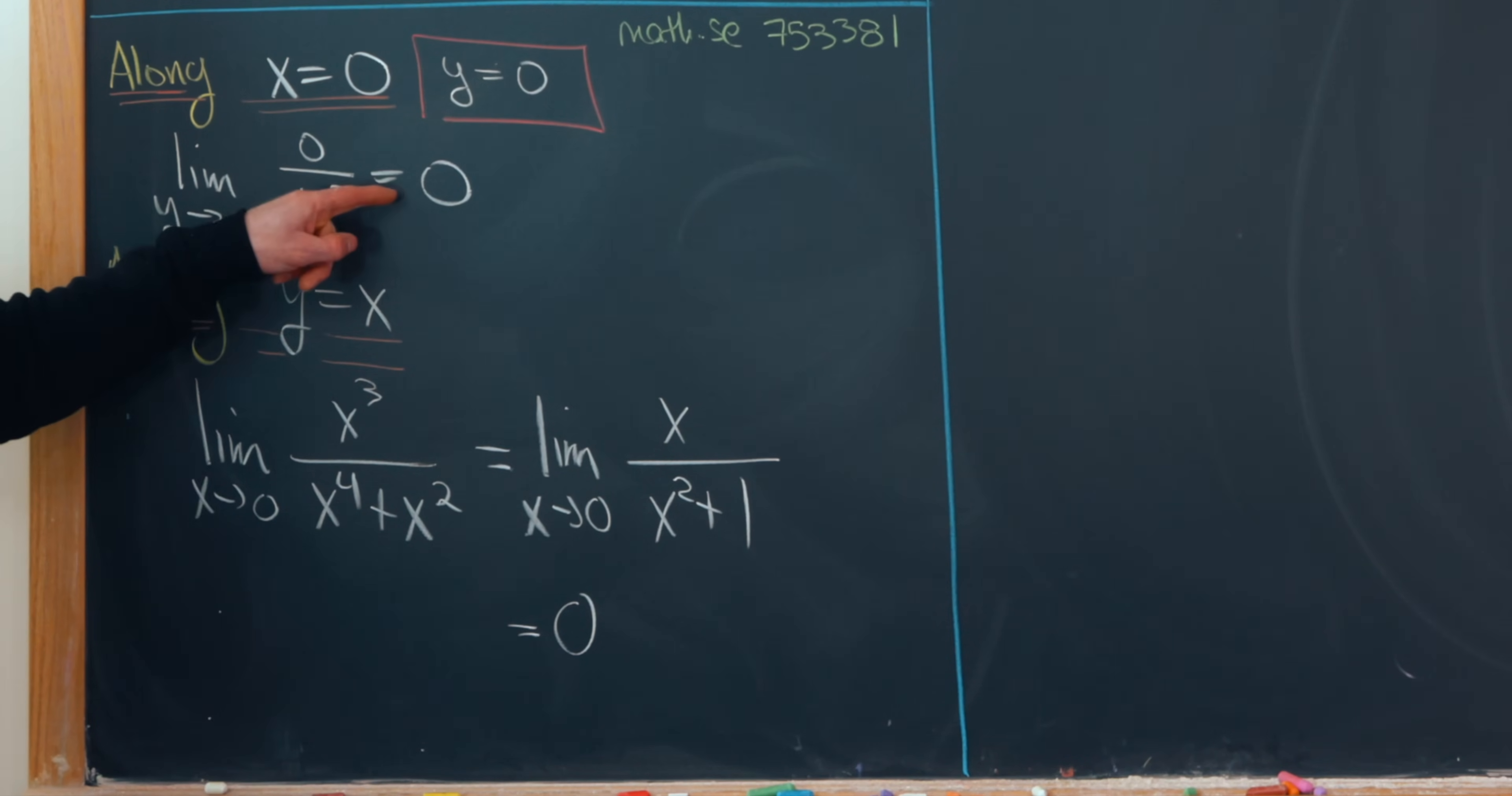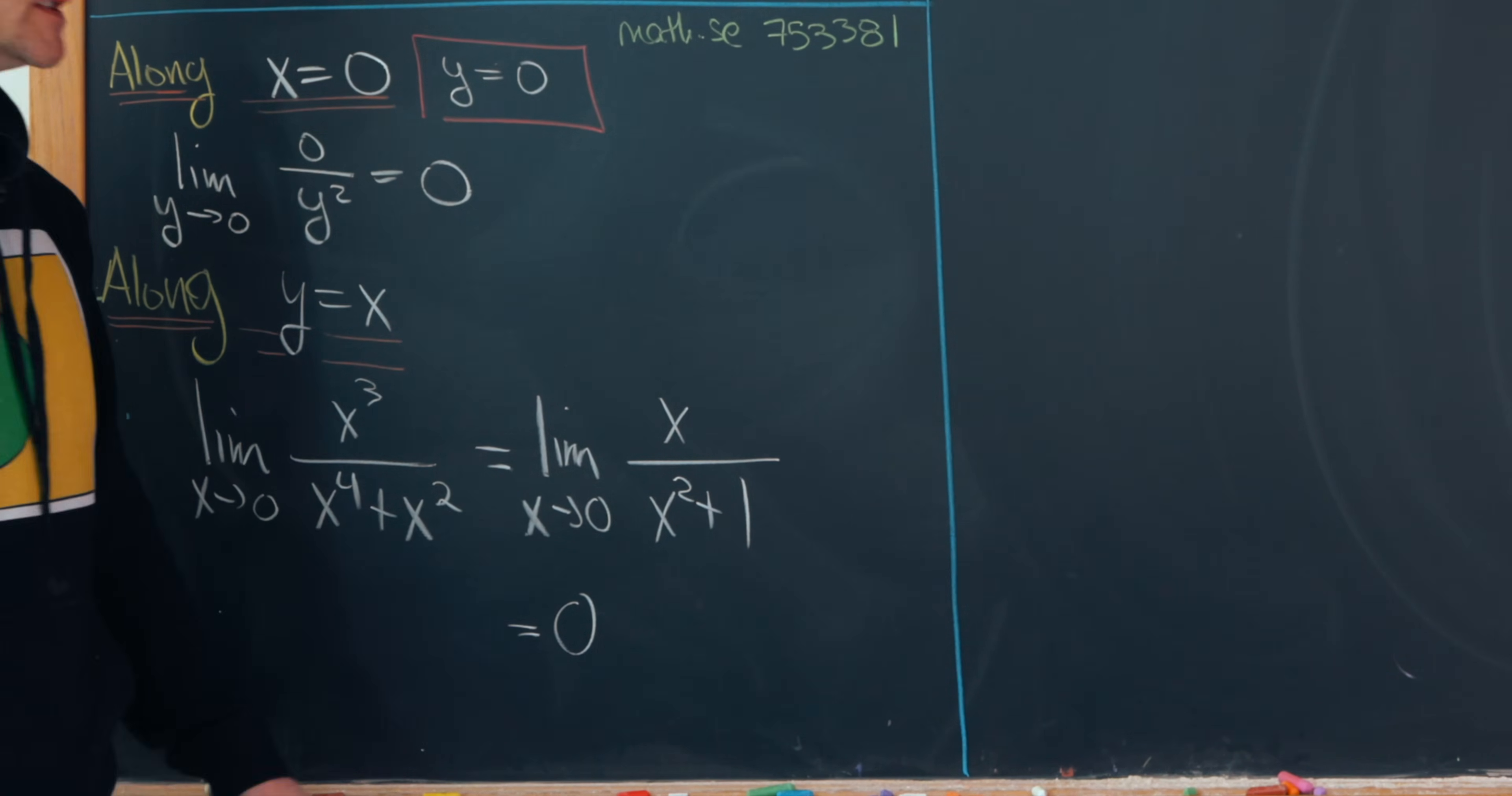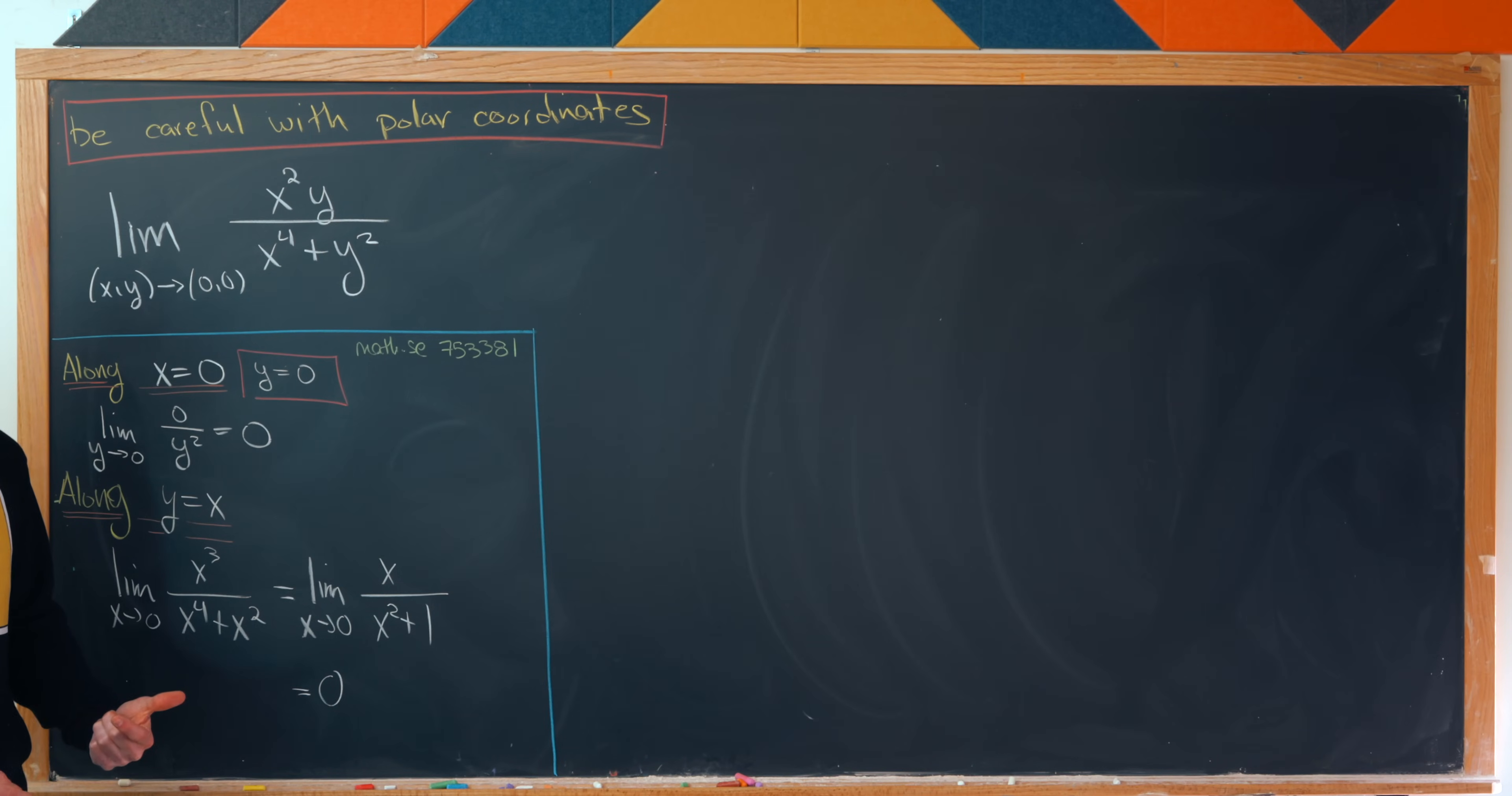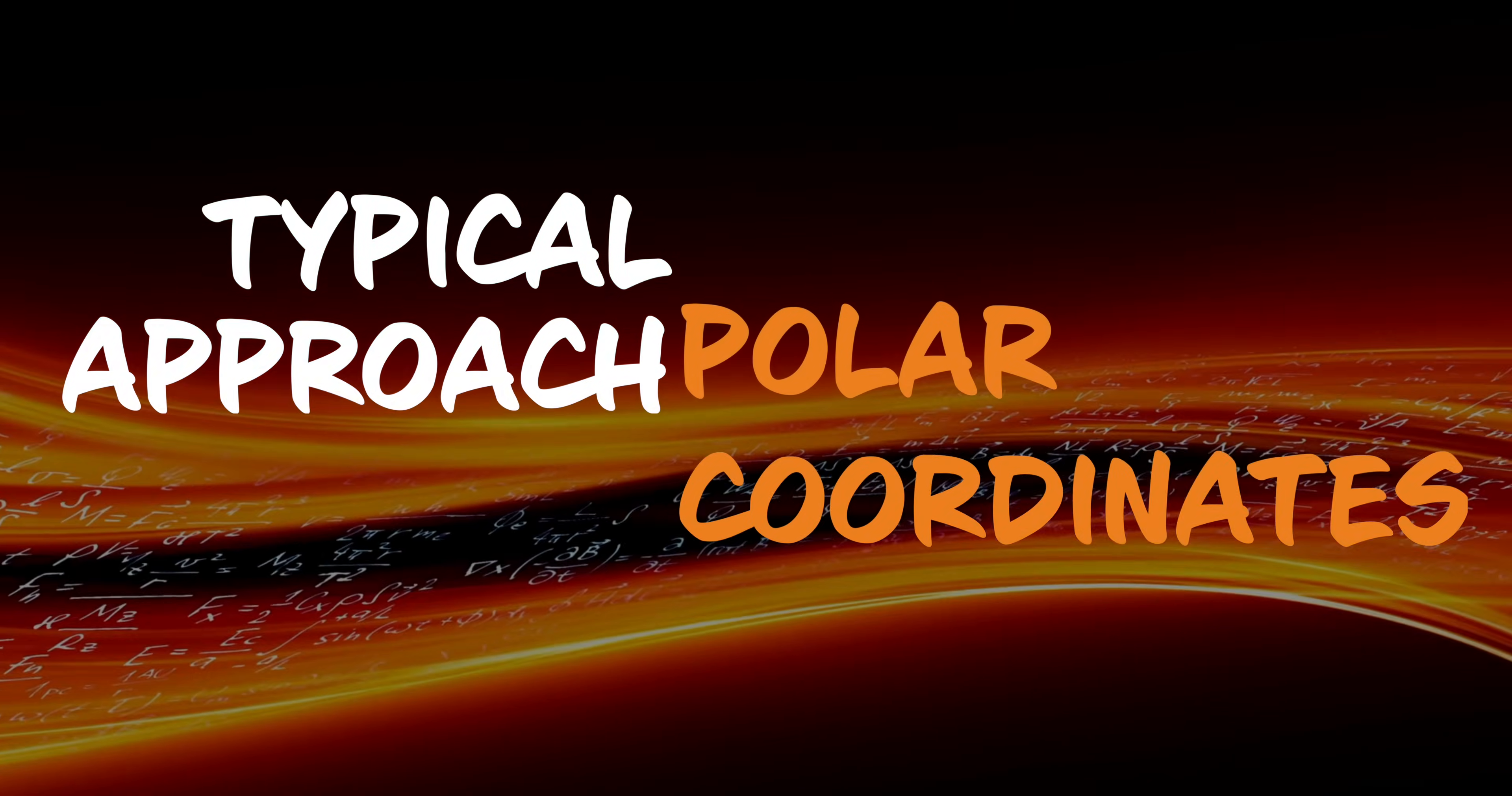Okay, so getting zero for this and this definitely provides some motivation that perhaps this limit exists and is in fact equal to zero. So like I said before, one way of calculating the value of the limit or backing up this data with a logical argument is to pass to polar coordinates.